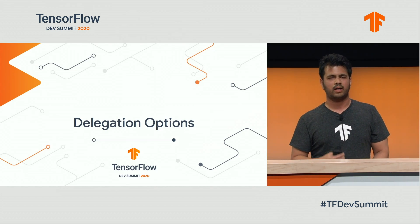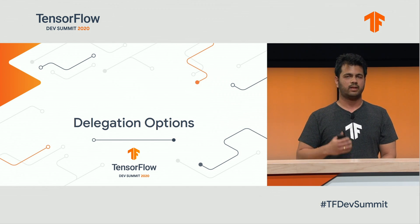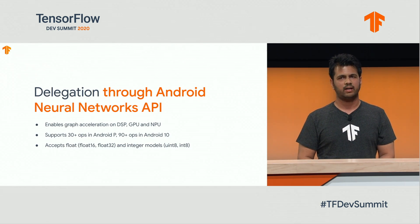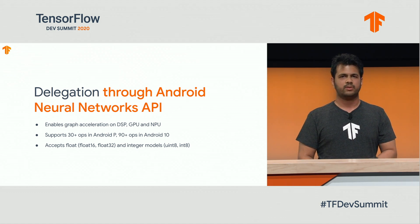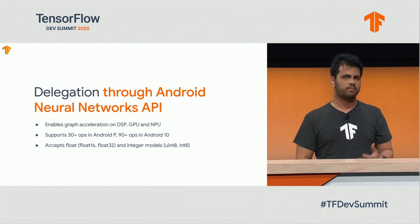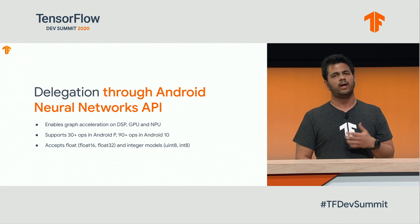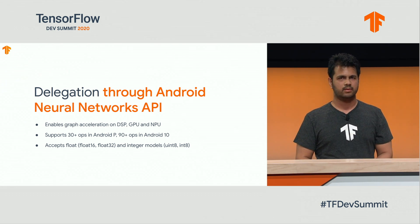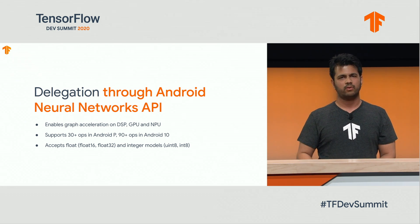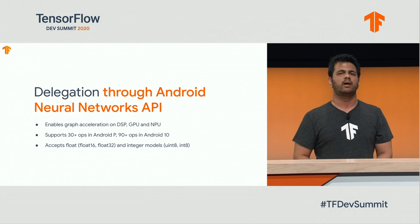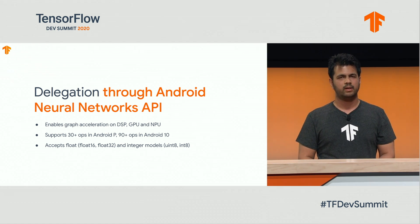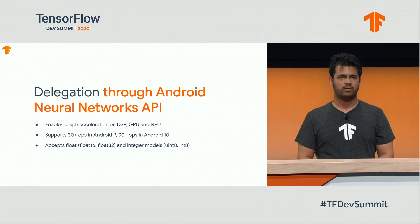Now that we know what happens under the hood, let's look at some of the delegation options in TF Lite. The first delegate that we have is the NNAPI delegate, which supports a lot of different accelerators, such as the DSP, GPU, and NPU across a variety of vendors. It runs on Android P and above. It supports more than 30 ops on Android P, and over 90 ops on Android Q. This is one of the very few delegates that accepts both floating point and integer models.